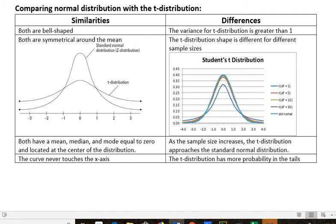Both are bell-shaped. Both are symmetrical around the mean. You can see in this graph the standard normal distribution, which is the Z distribution, has this shape that you've come to know. And the T distribution is down here with not as high of a bump, but it still has a bell shape and it's still symmetrical around the mean.